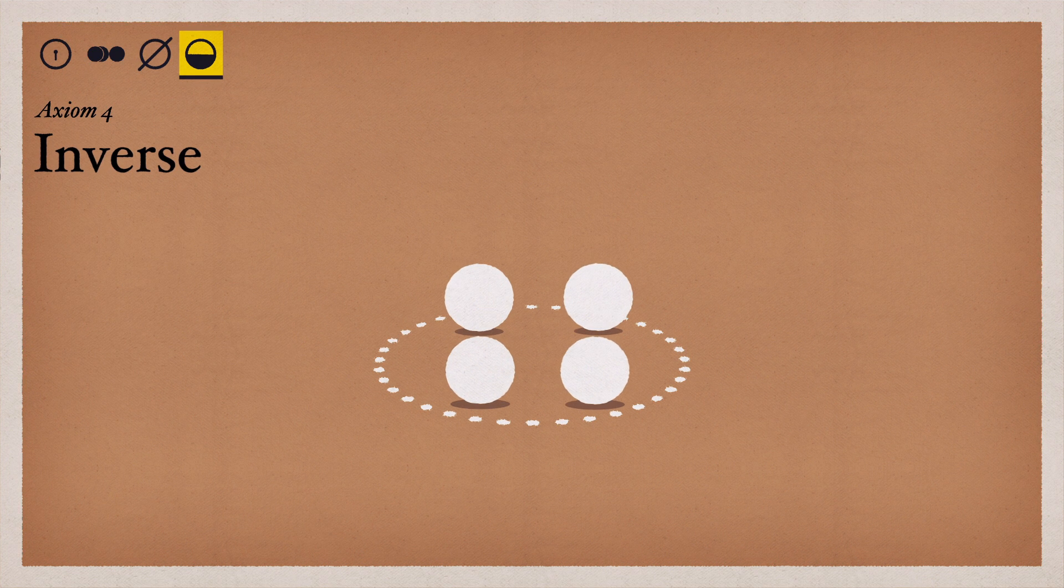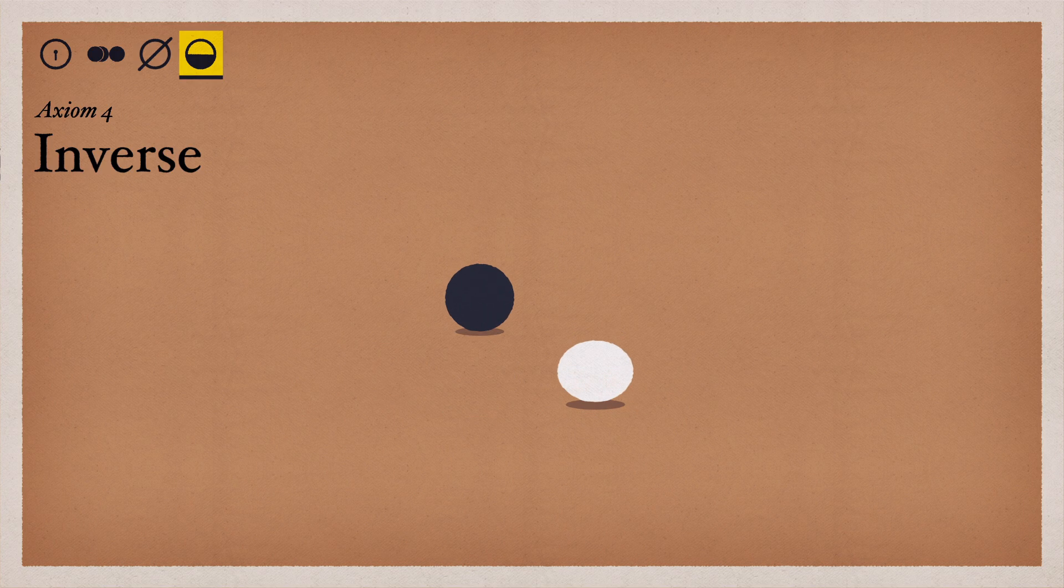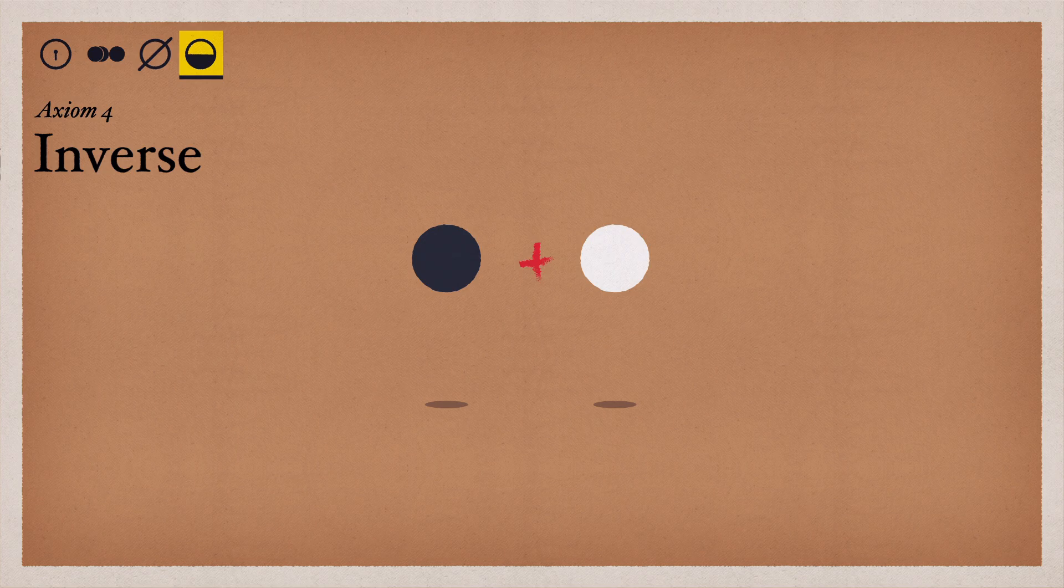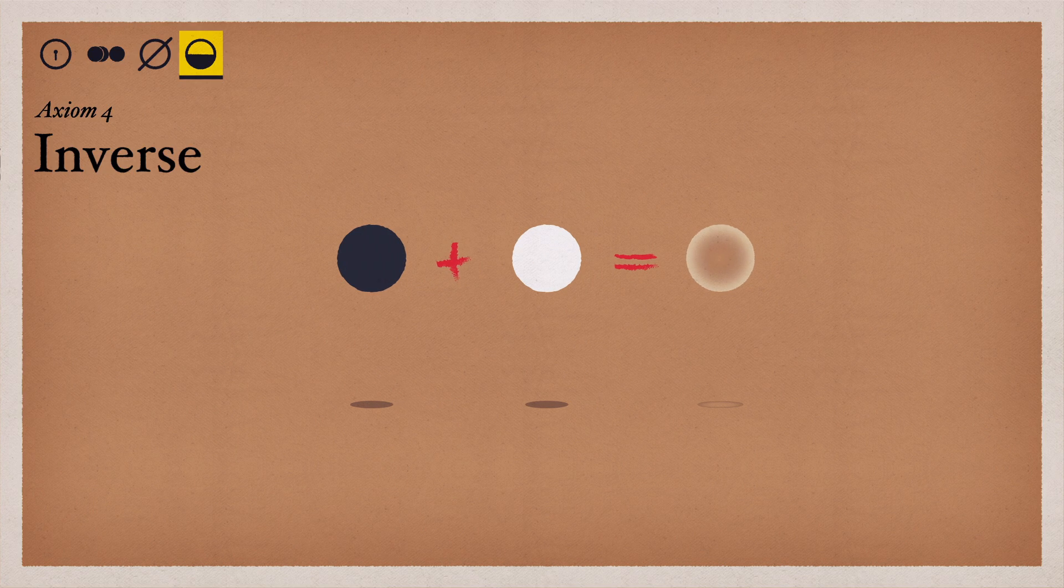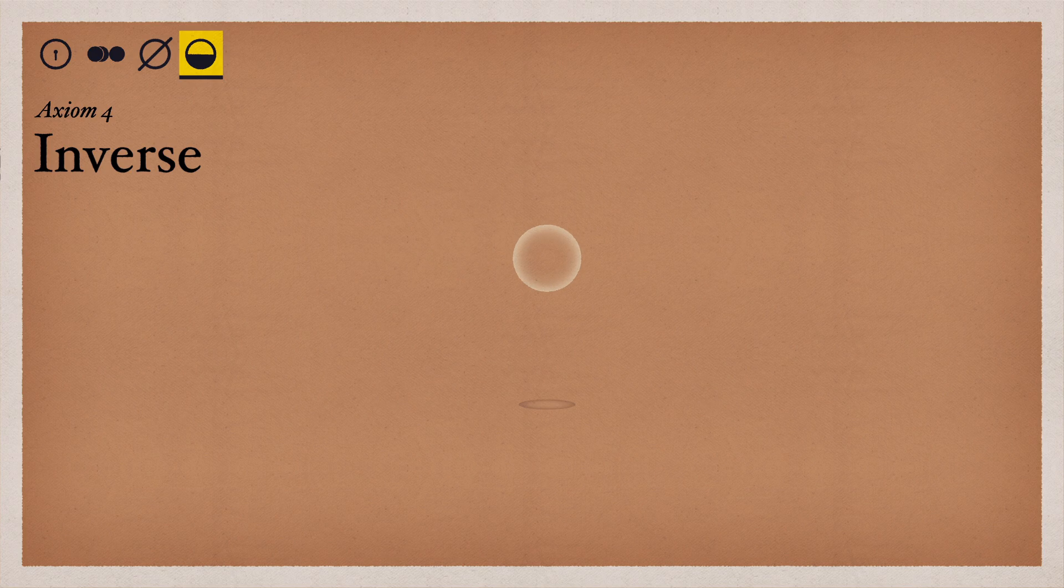Axiom 4: Every group element has an element called its inverse, also in the group. When the two are brought together using the group's addition operation, they result in the identity element, 0, so they can be thought of as cancelling each other out.